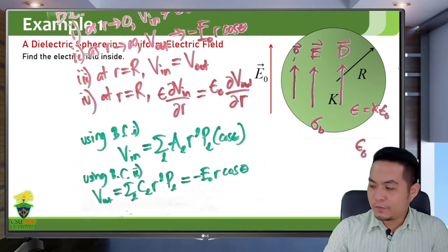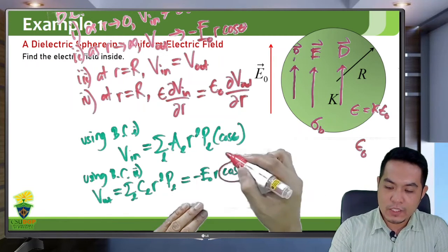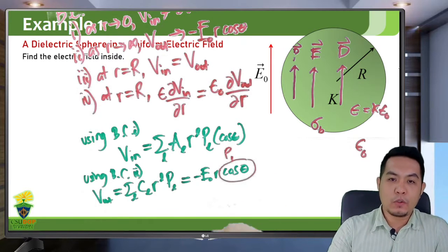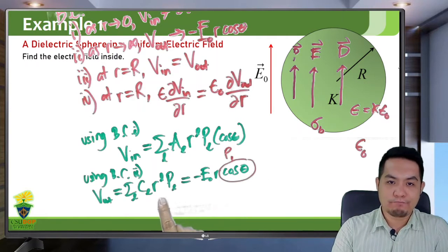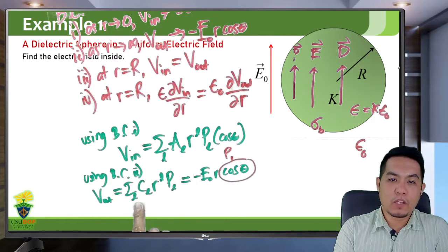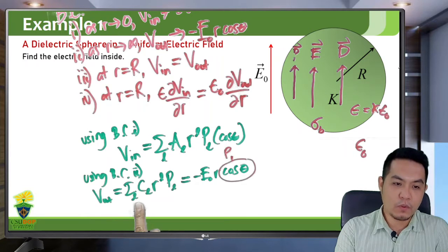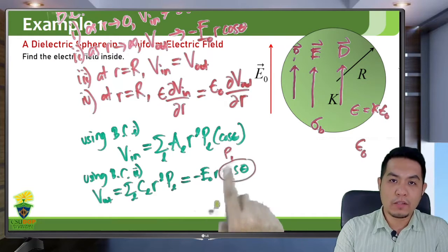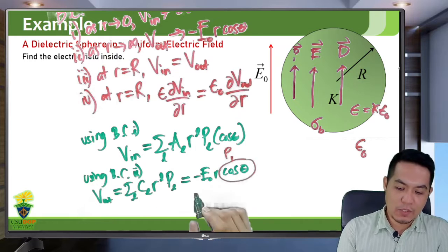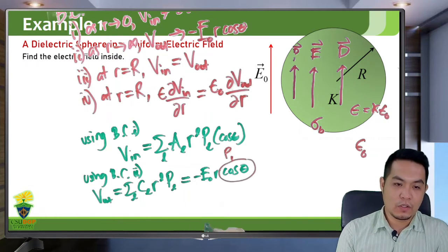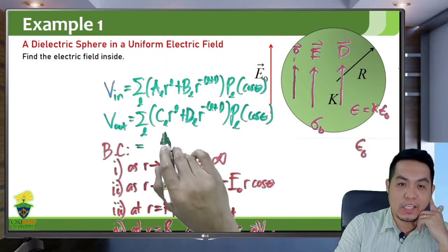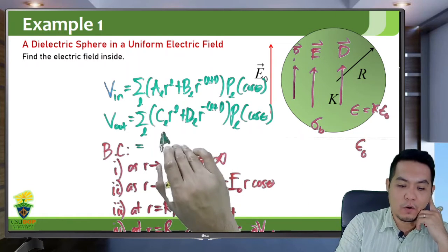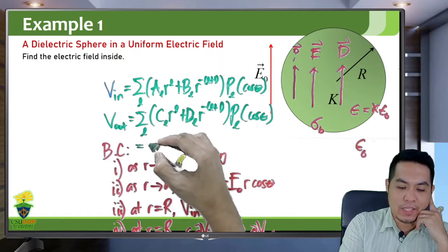So in the general solution for the potential outside, only C₁ survives and C₁ equals negative E₀. Our simplified general solution for the potential outside is now: negative E₀ R cosθ (this is P₁), plus the term from the C₁ R¹ P₁ contribution, plus a summation over L of D_L times R to the negative L+1 times P_L of cosθ. These are now our two simplified general solutions for the potential inside and outside.